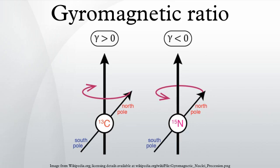With this phenomenon, the sign of γ determines the sense of precession. Most common nuclei such as ¹H and ¹³C have positive gyromagnetic ratios.